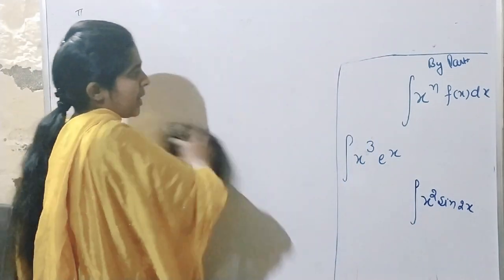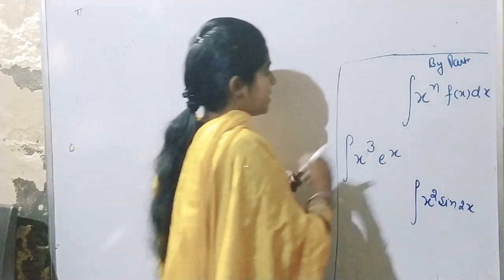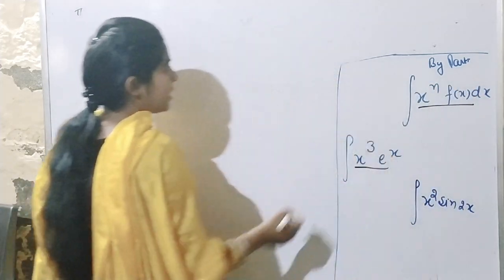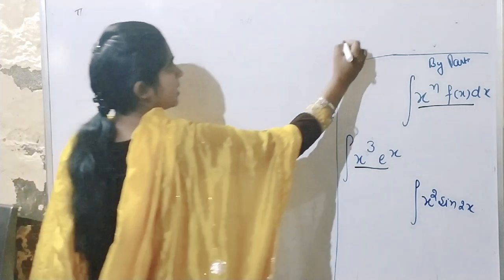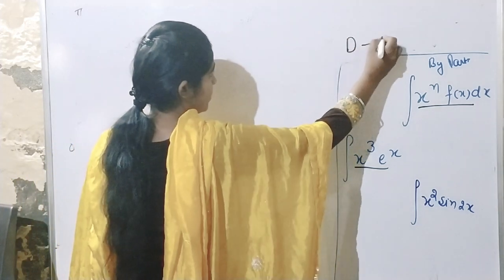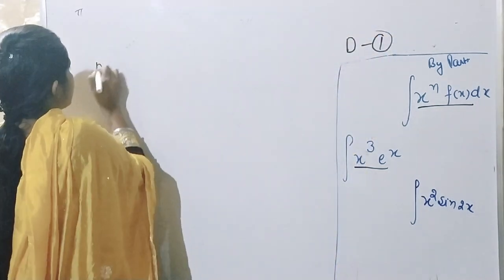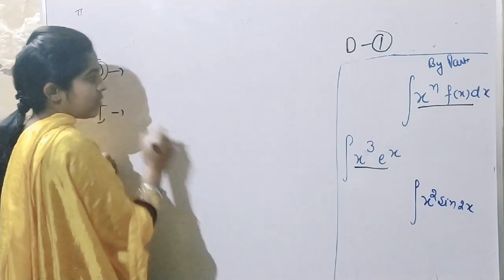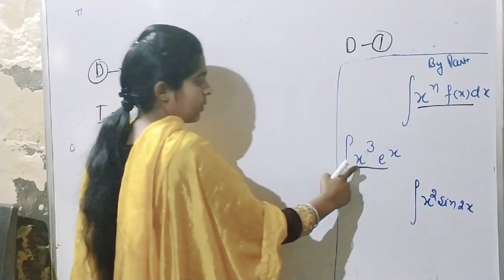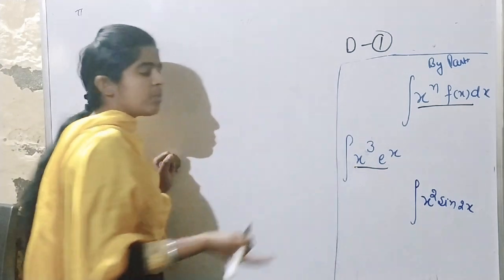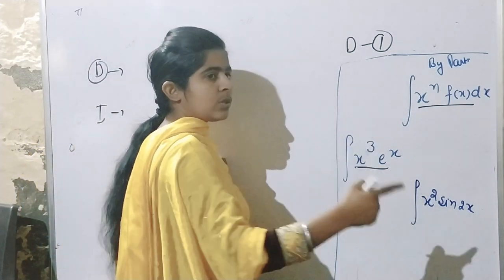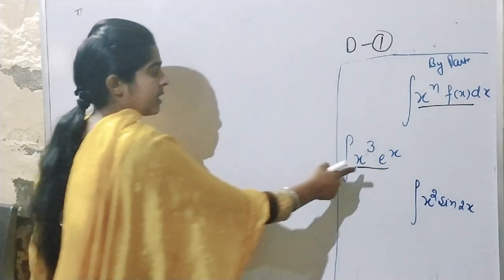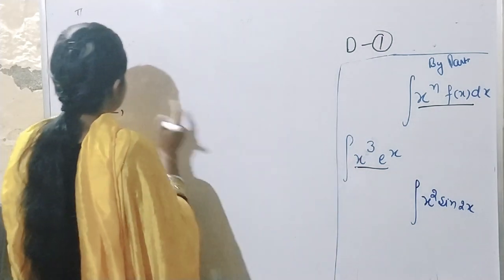This trick is by-parts, also known as the DI method. In the DI method, you do derivation and then integration. The first function is differentiated and the second is integrated. It is a good method and very easy.